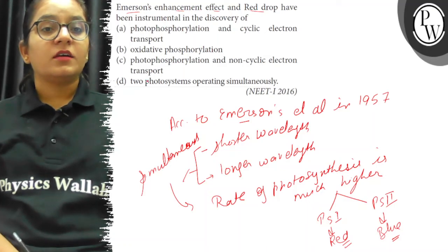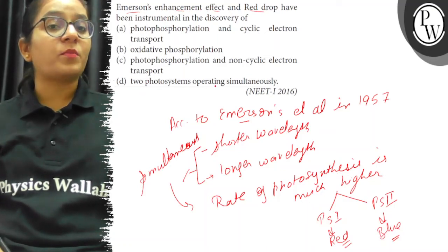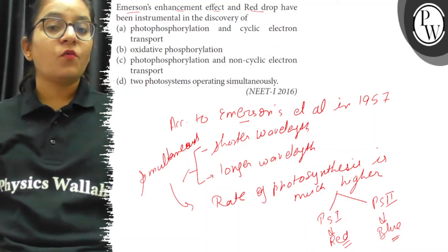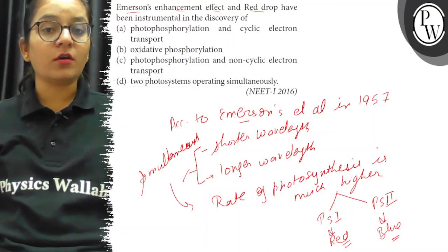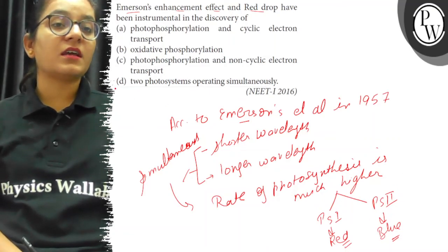Emerson enhancement effect demonstrates two photosystems operating simultaneously, one for the longer wavelength of light and another for the shorter wavelength of light. So, the correct answer here is option D.